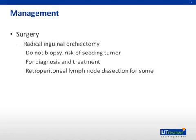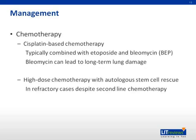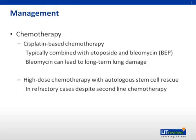Retroperitoneal lymph node dissection may be required in some patients. Radiation, particularly in seminoma pathologies which are more sensitive to radiation, can be helpful in reducing relapse risk. Chemotherapy is also important and has represented a significant advance in improving mortality. It is the backbone of metastatic disease, and cisplatin-based chemotherapy has revolutionized management. Chemotherapy regimens often include bleomycin, which can lead to long-term pulmonary toxicity, especially in patients receiving supplemental oxygen during administration. For patients who relapse, high-dose chemotherapy with autologous stem cell transplantation is a potentially curative option.